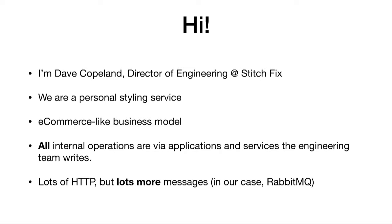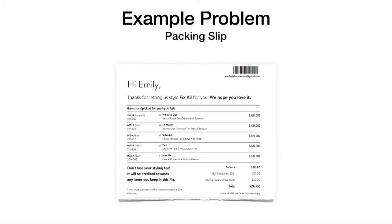We have software that runs our warehouse. Software that our buyers use — just like Nordstrom's or Macy's would. Software for the styling process. Everything is something that we write. A lot of these systems interact with synchronous HTTP services, but messaging and events are even more a thing that we do. That's a big part of how all of our software works together to implement business processes. We're going to talk about one in particular called the pack slip.